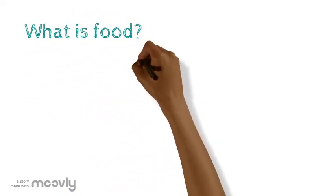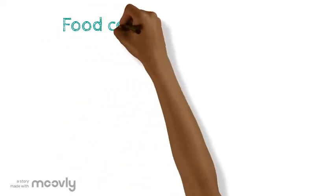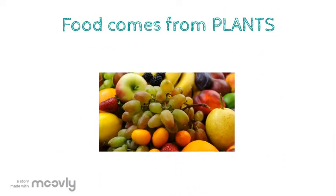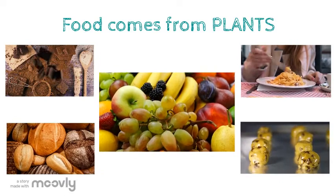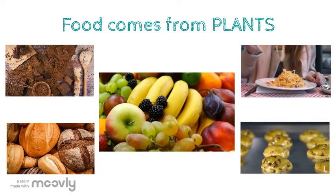What is food? Everything we eat comes from a living thing. We eat plants. Fruits and vegetables are obviously plants, but chocolate, bread, pasta, and cookies are also made from plants.